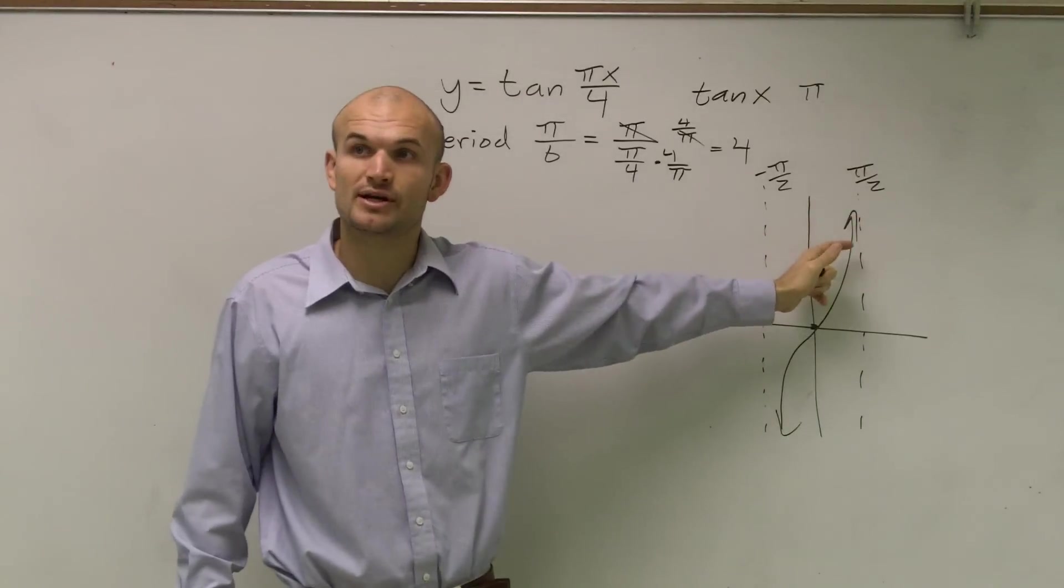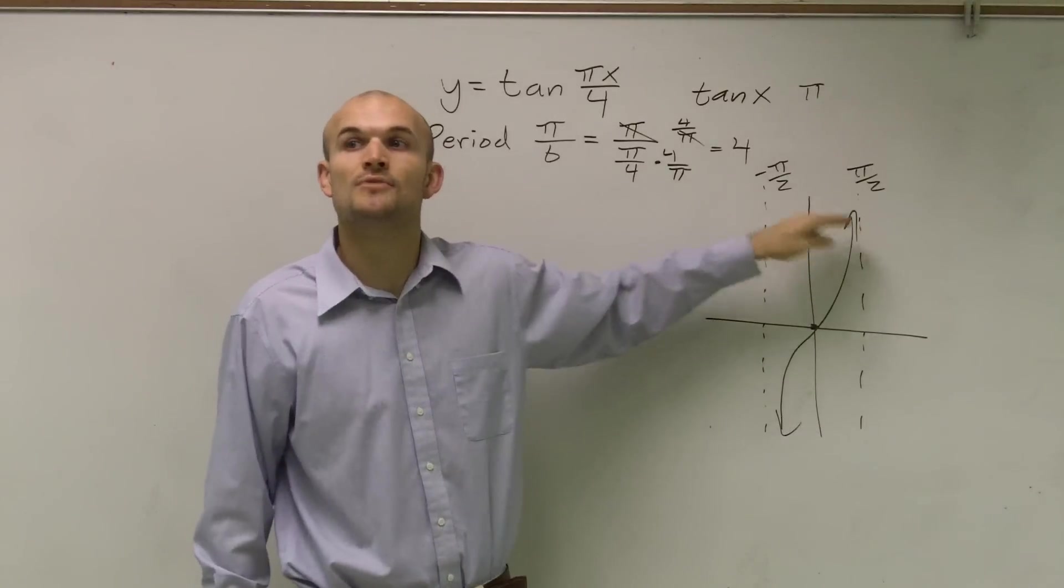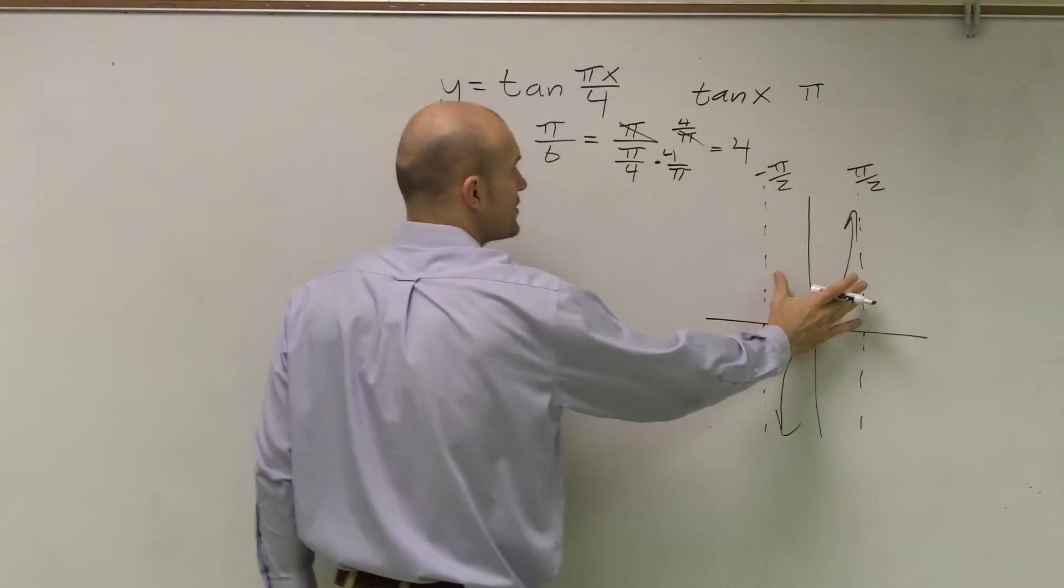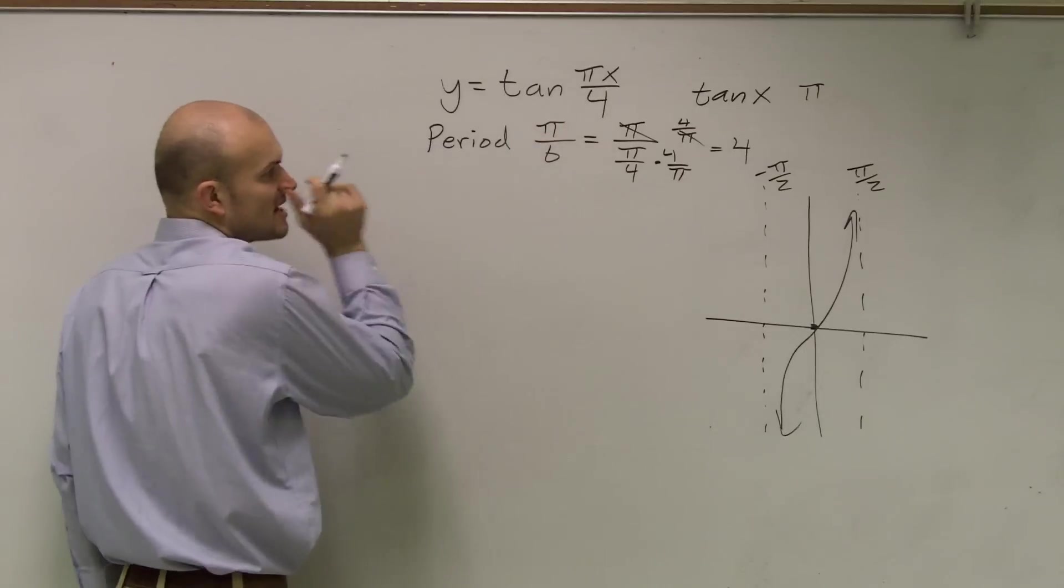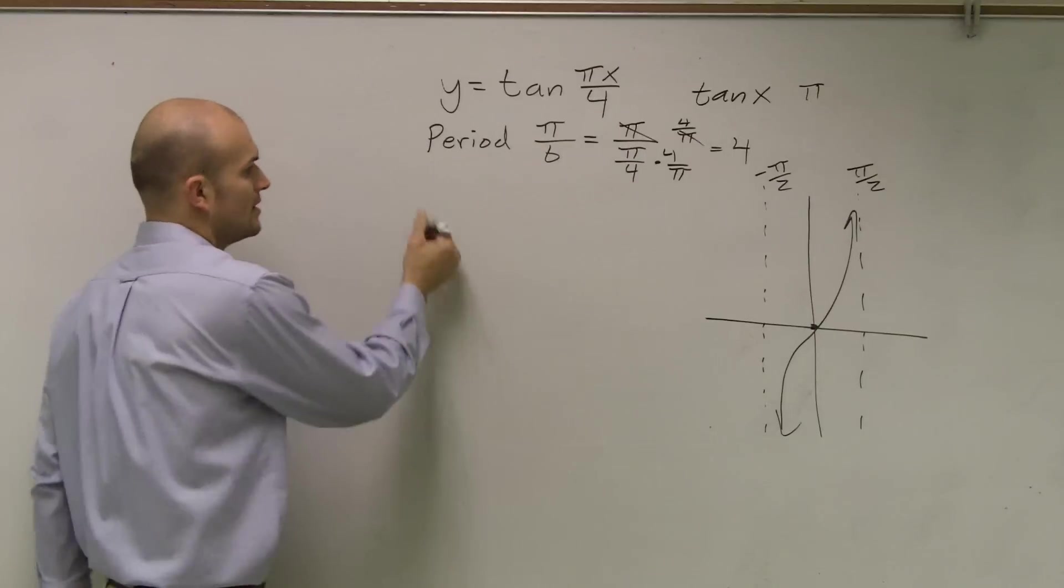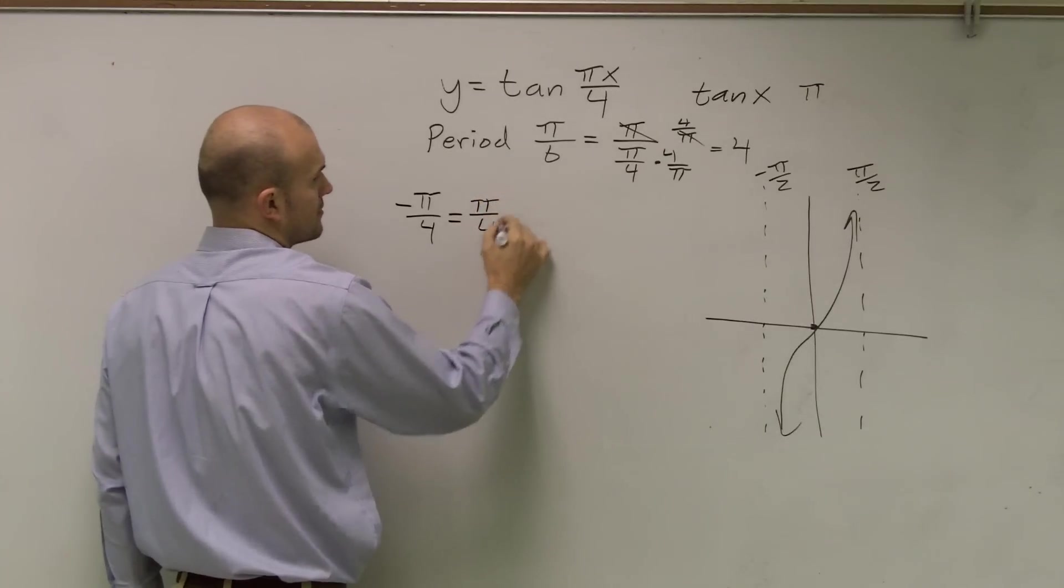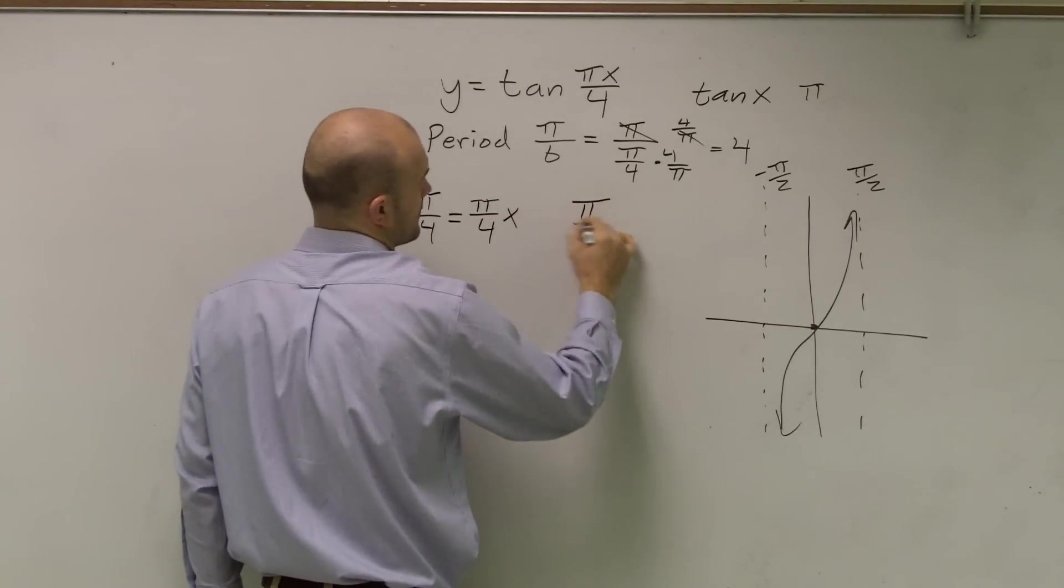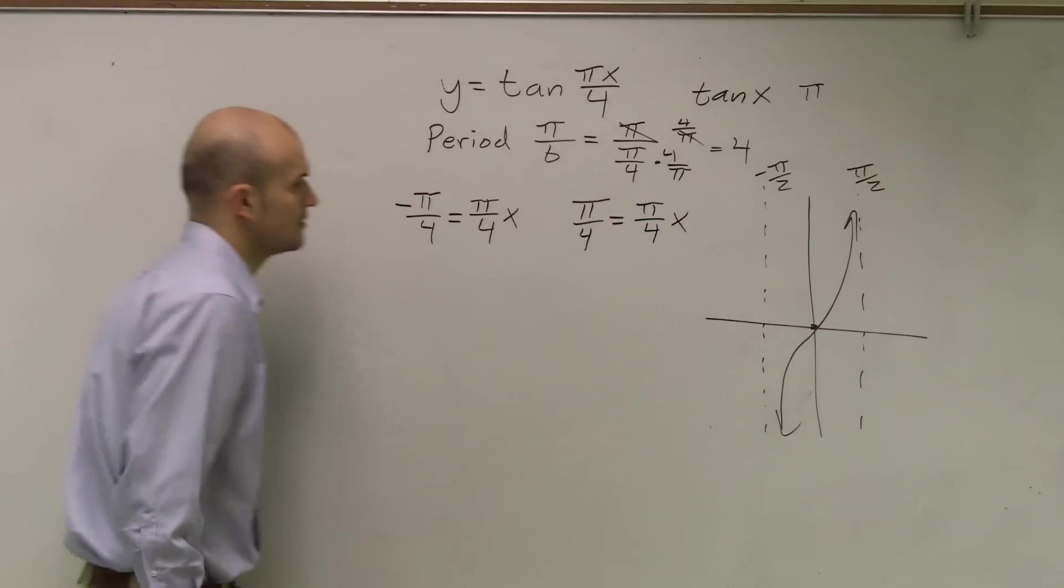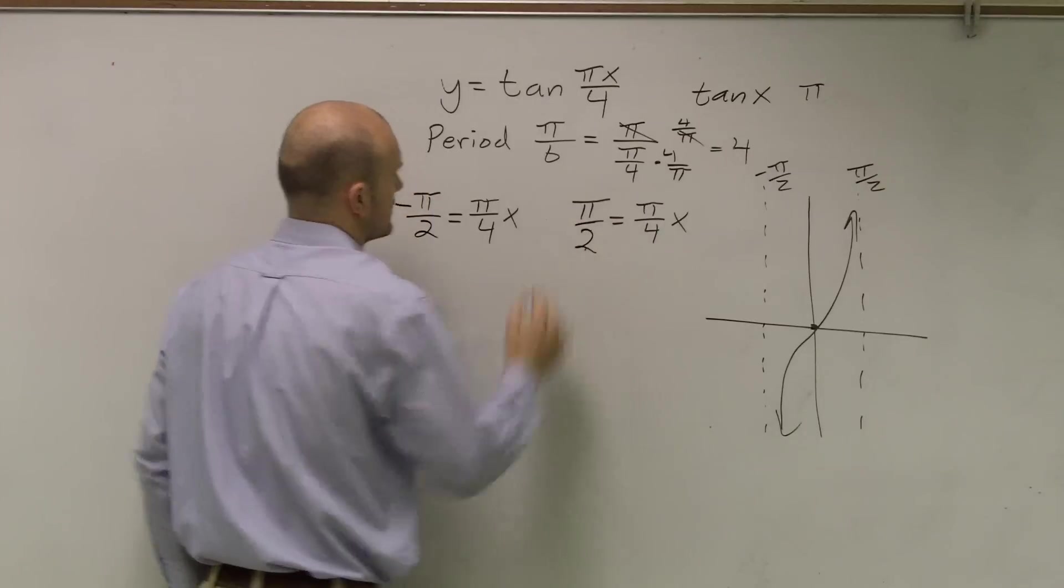Just like you have to know that the period for the parent graph is going to always be π over b, you also have to know that the parent graph, the two asymptotes are negative π over 2 and π over 2. Because now what happens is we need to know that those two are for the parent graph because what we're going to do is I need to figure out what are these transformations of multiplying by π and dividing by 4. What did that do to my graph? So what I do is I take my two asymptotes and I set it equal to my function.